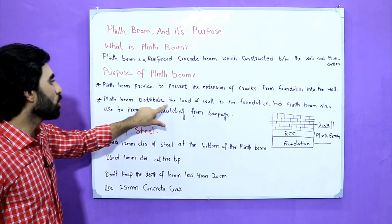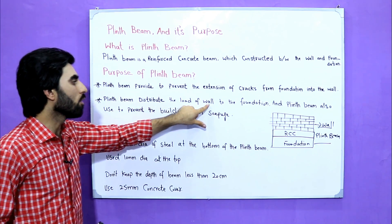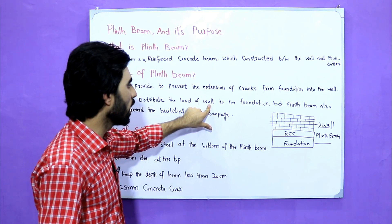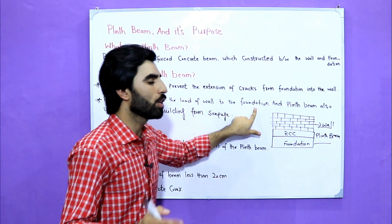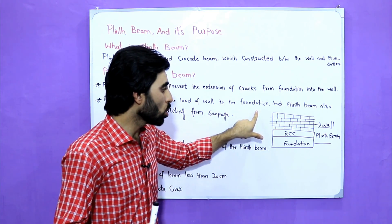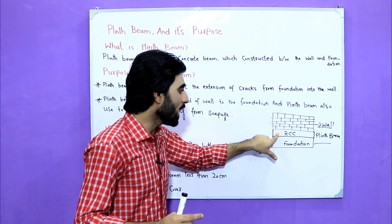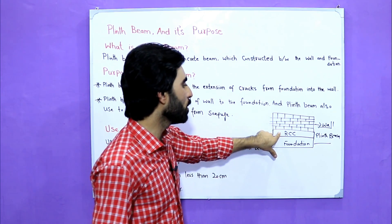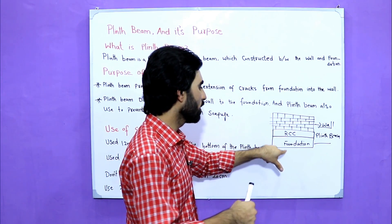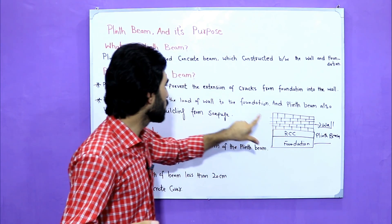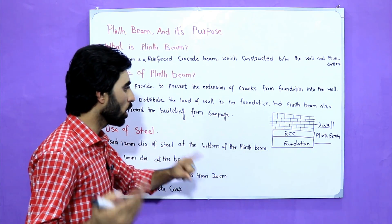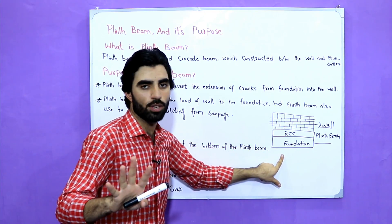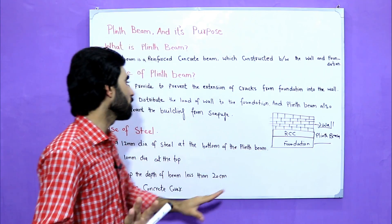Plinth beam distributes the load of the wall to the foundation. The RCC beam or plinth beam directly converts the load of the wall to the foundation. This is another purpose.